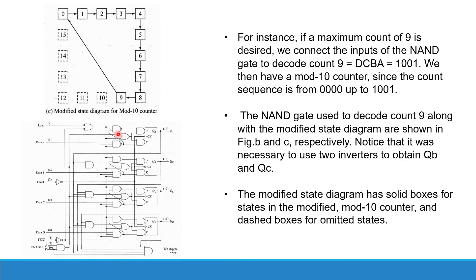The NAND gate used to decode count 9 along with the modified state diagram is shown in figure B and C respectively. Note that it is necessary to use two inverters to obtain QB and QC.